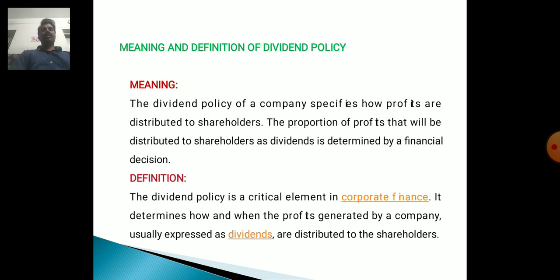Meaning and Definition of Dividend Policy. The Dividend Policy of a company specifies how profits are distributed to shareholders. The proportion of profits that will be distributed to shareholders as dividends is determined by financial decisions. The Dividend Policy is a critical element of corporate finance. It determines how and when the profit generated by a company, usually expressed as dividends, is distributed to the shareholders.